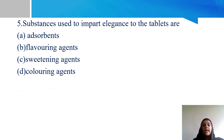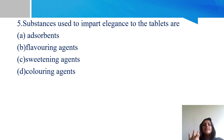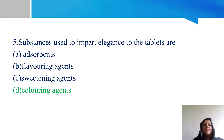Fifth question: substances used to impart elegance to the tablets. Options: A - adsorbents, B - flavoring agents, C - sweetening agents, and D - coloring agents. The right answer is option D - coloring agents. In tablets, elegance is imparted by coloring agents, usually FDA-approved coloring agents.